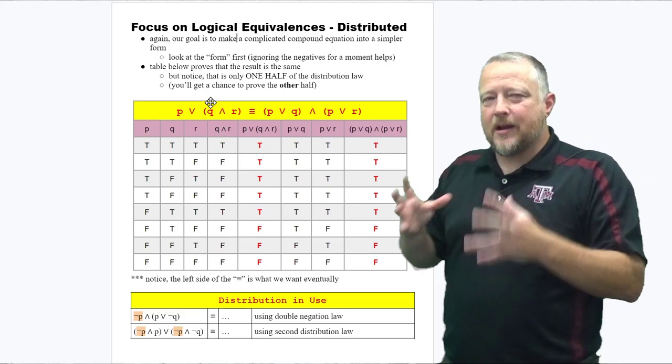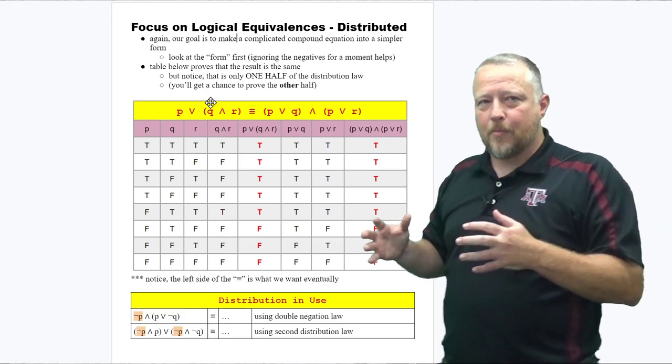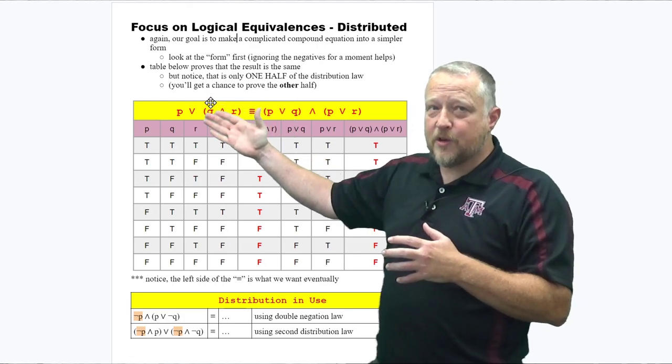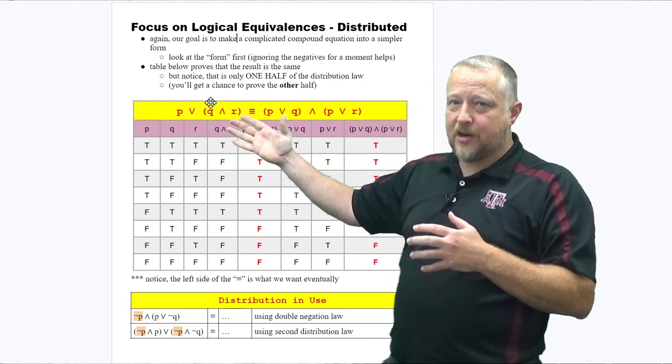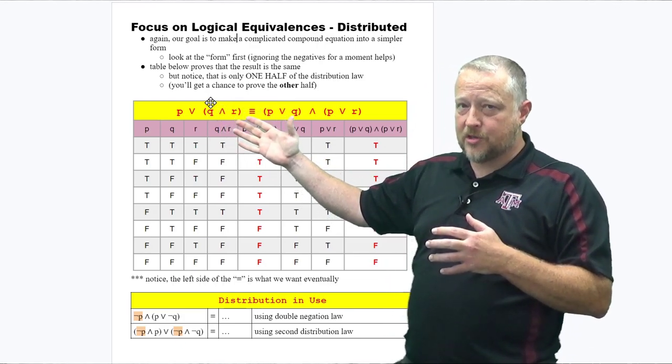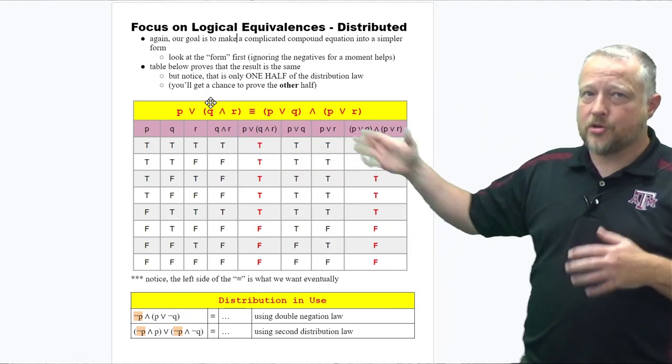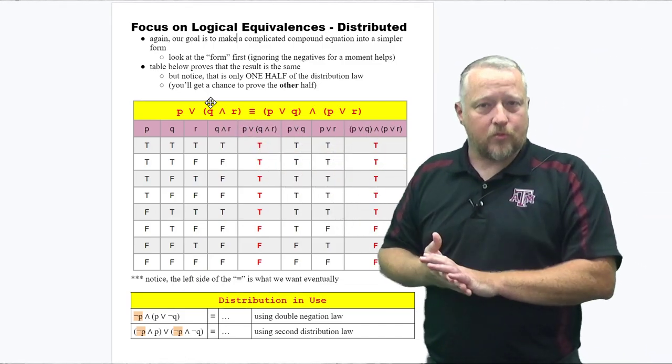The important part is getting it into the form. If your form is similar to this or you can make it that way by doing some simple substitution, then you can get your distributive property set up for the rest of that equation.